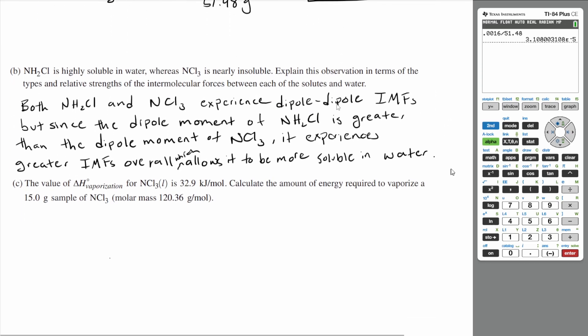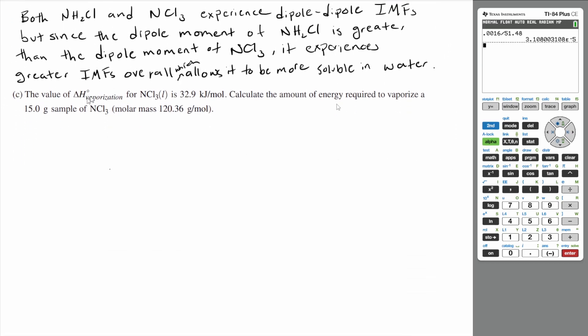All right, let's go on to the last part, which is C. The value of enthalpy of vaporization for NCl3 is 32.9 kilojoules per mole. Calculate the amount of energy required to vaporize a 15 gram sample of NCl3, which has a molar mass of 120.36.